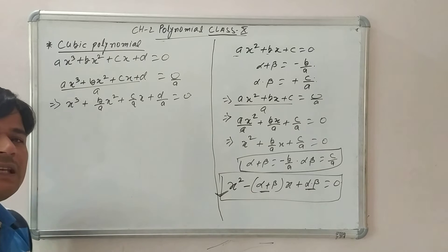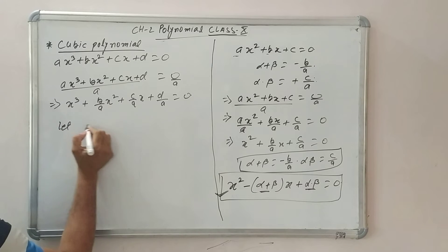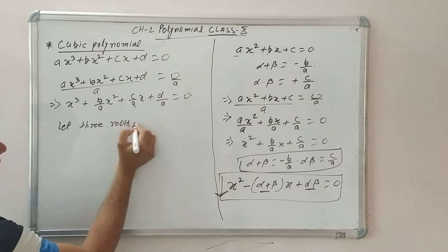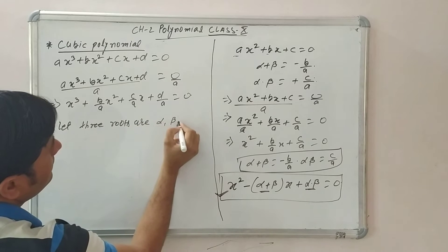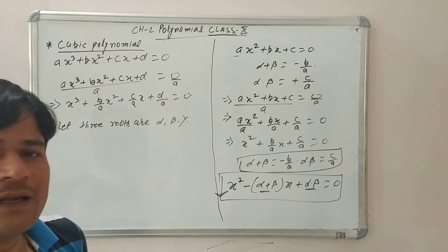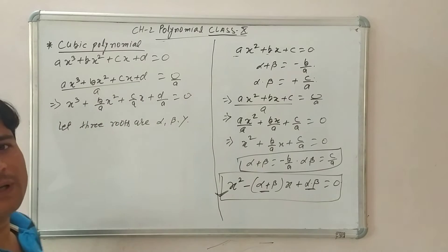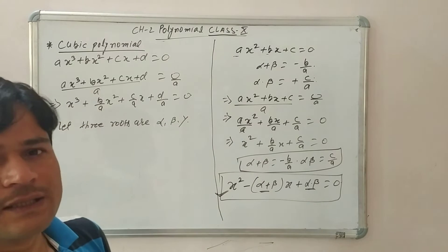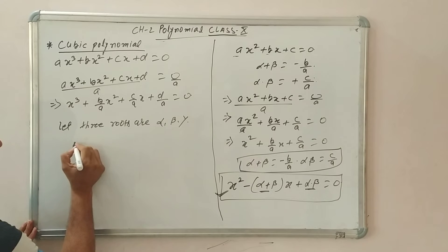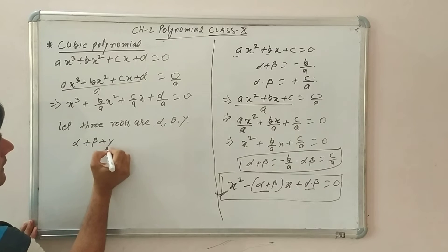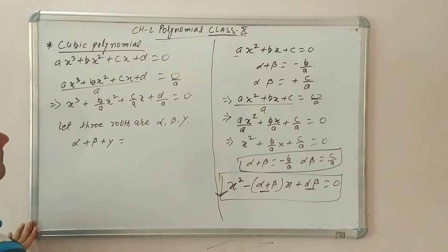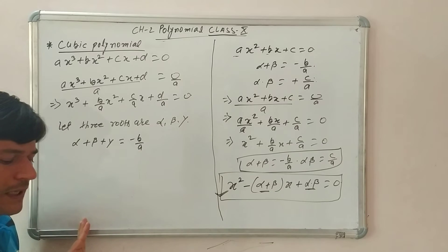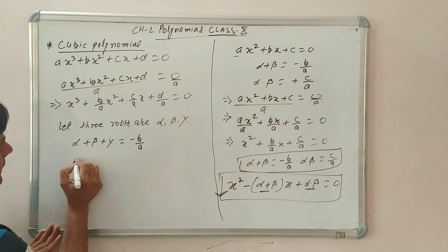This cubic equation has three roots. Let the three roots be alpha, beta, and gamma. Now, alpha plus beta plus gamma equals minus b upon a — that is, negative of the coefficient of x² upon the coefficient of x³.